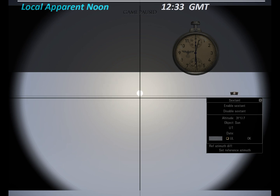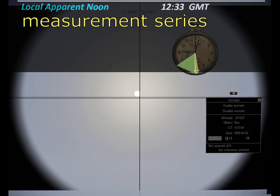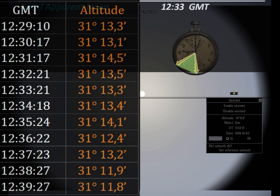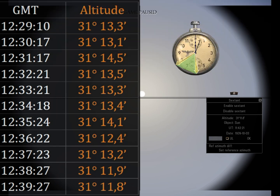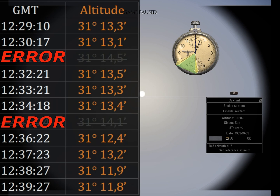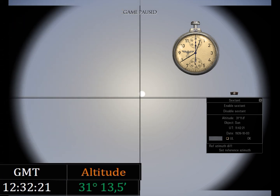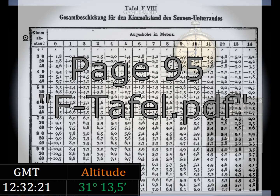Take a series of measurements over the time span that local apparent noon should cover. Eliminate measurement results that you think are unreliable. Select the highest measured altitude from the remaining values.